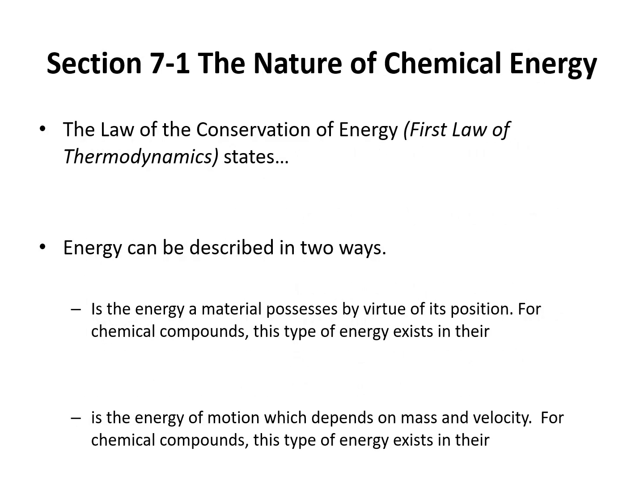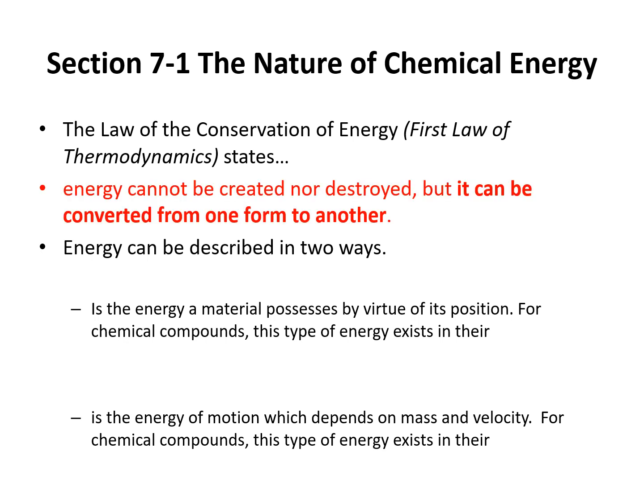We'll start with the law of conservation of energy. This law states that energy can't be created nor destroyed, but rather it can be converted from one form to another. We can think about it in terms of potential energy — the energy a material possesses by virtue of its position. For a chemical compound, this might be the type of energy that exists in a chemical compound's bonds.